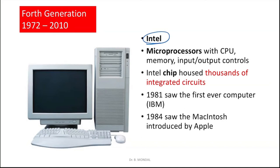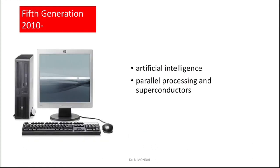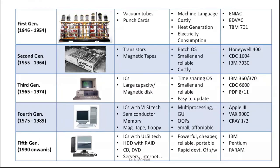Third generation computers were the first to use keyboards and monitors with an operating system interface, running several applications at once using a central program, and became cheaper and smaller. Then fourth generation computers came from 1972 to 2010. Intel was a big player — microprocessors with CPU, memory, and input/output controls were used. Intel chips housed thousands of integrated circuits. In 1981 IBM showed the first personal computer, and in 1984 Apple introduced the Macintosh.